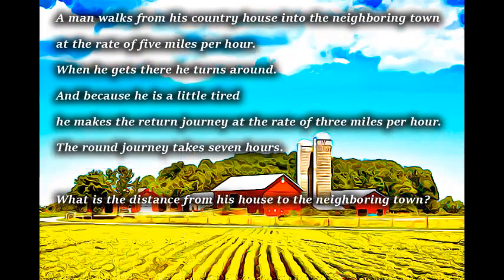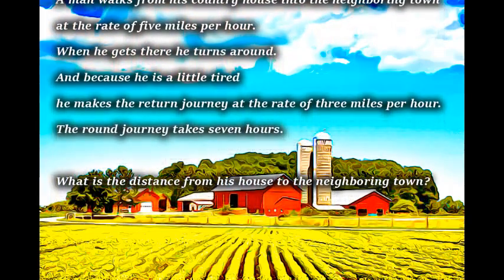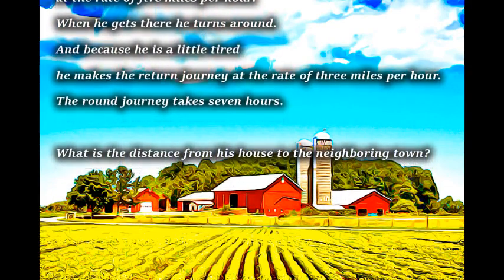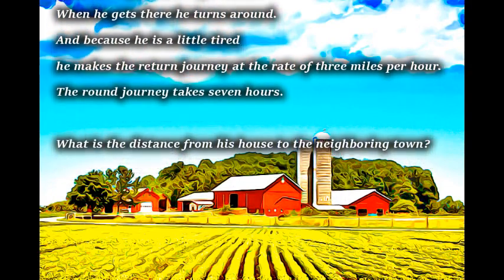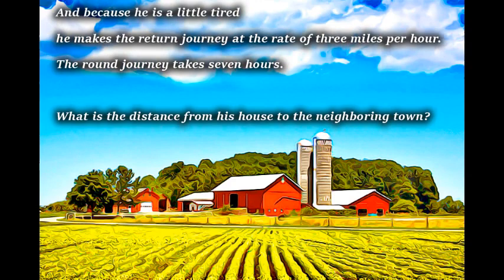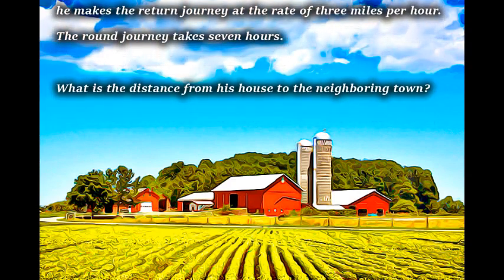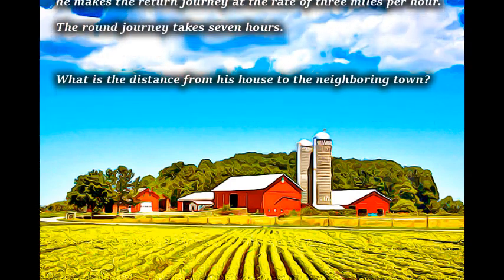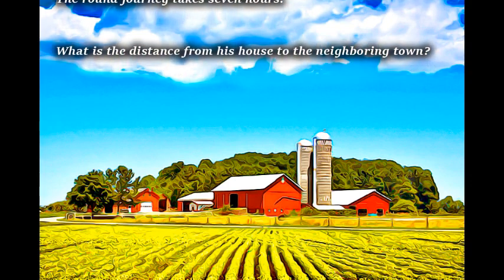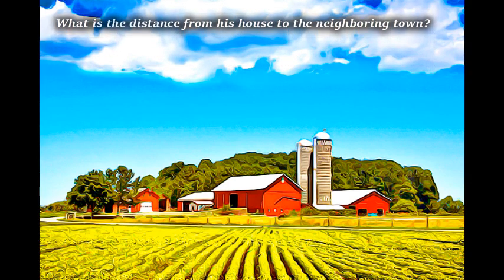A man walks from his country house into the neighboring town at the rate of 5 miles per hour. When he gets there, he turns around, and because he is a little tired, he makes the return journey at the rate of 3 miles per hour. The round journey takes 7 hours. What is the distance from his house to the neighboring town?